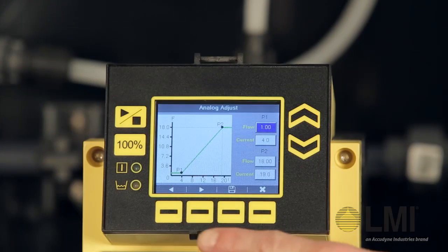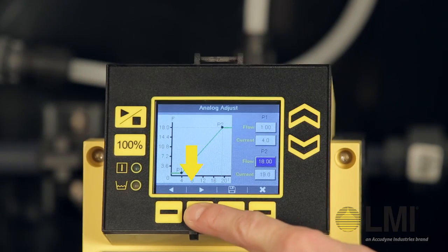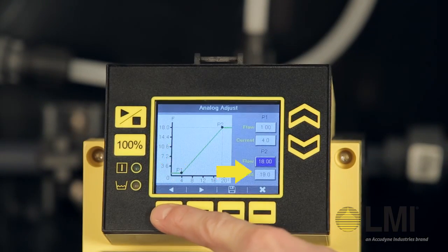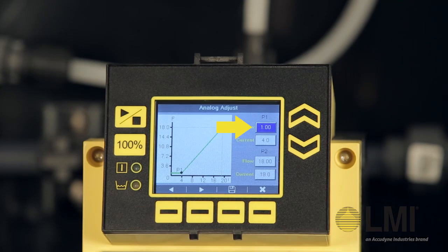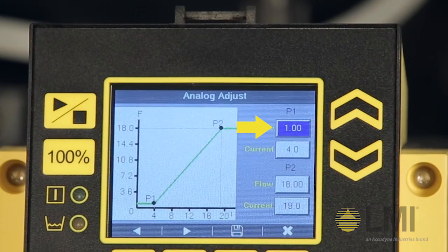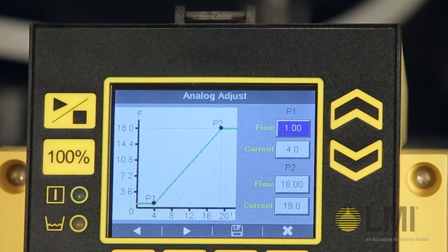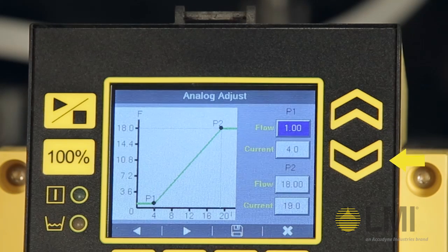Use the left and right indicators with the corresponding context-sensitive buttons to scroll between parameters. The blue highlighted parameter indicates the selected value, which can be updated by using the up and down arrow buttons.